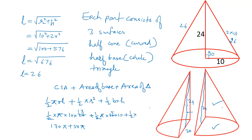And half base into height. Base of the triangle is 20 and height is 24. So if you cancel out this, you get 240. When you add these two, we have 180 pi plus 240.